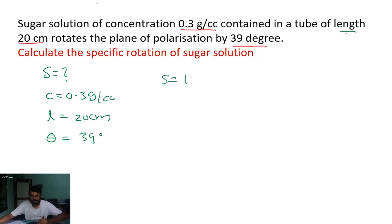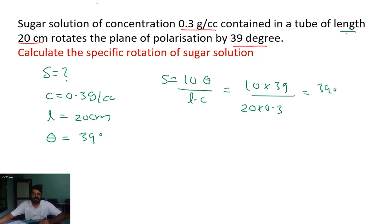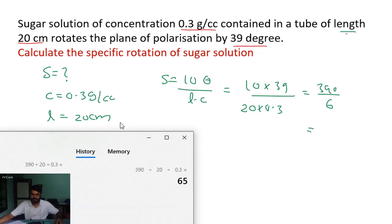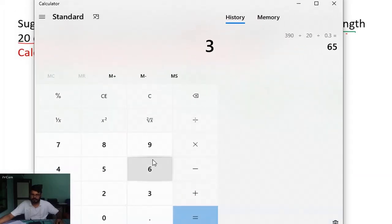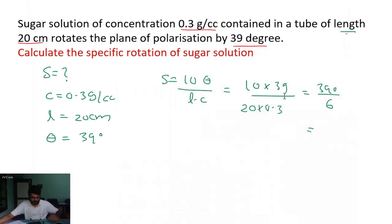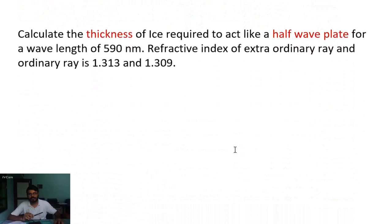The equation for specific rotation is S equals 10θ divided by l times c. Substituting: S equals 10 times 39, divided by 20 times 0.3. That gives 390 divided by 6, which equals 65. So the specific rotation S equals 65 degrees.